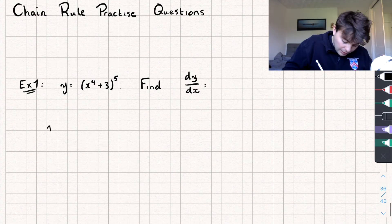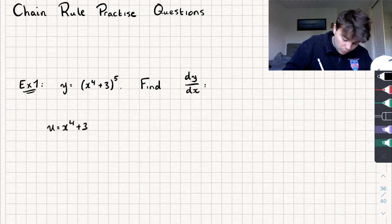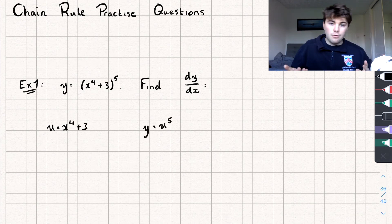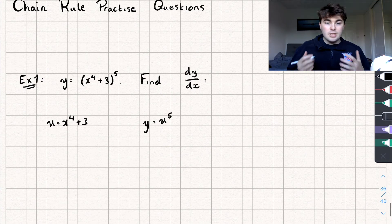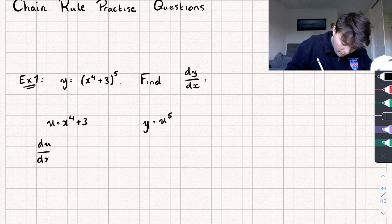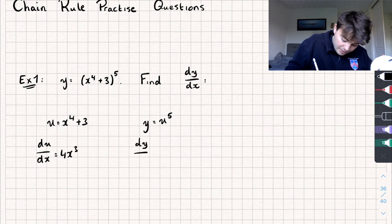In this example I'm going to let u equal x to the power of 4 plus 3, so then y is going to be equal to u to the power of 5. And so I'm going to find du by dx, which is going to be equal to 4x cubed.